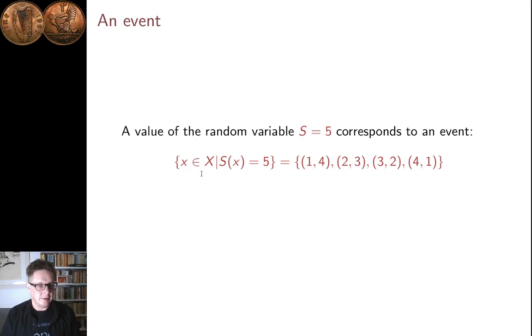It's x, an outcome, x an element of the sample space, such that—remember this upright line reads as such that—S(x), the mapping of x using the random variable, is equal to 5. And in this case here, that corresponds to 4 outcomes. So S equals 5, when we say that, we're often thinking of this set of outcomes here, the outcomes that map to 5 under the random variable, and in this case, that corresponds to 4 outcomes.